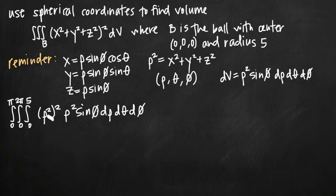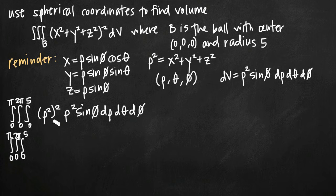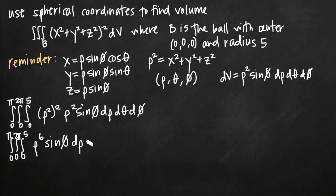Now that we have our limits of integration, we simplify the integrand and evaluate. We set up the triple integral with limits 0 to pi for phi, 0 to 2pi for theta, and 0 to 5 for rho. Combining rho to the fourth from the integrand with rho squared from dV gives us rho to the sixth, multiplied by sine of phi, then d rho d theta d phi.